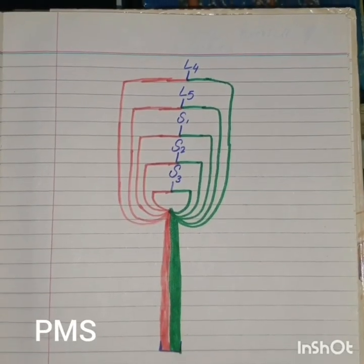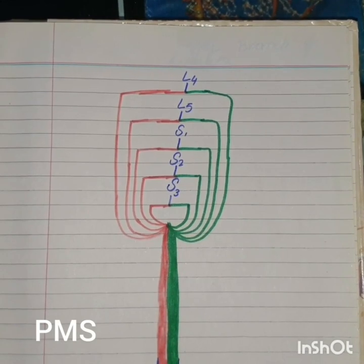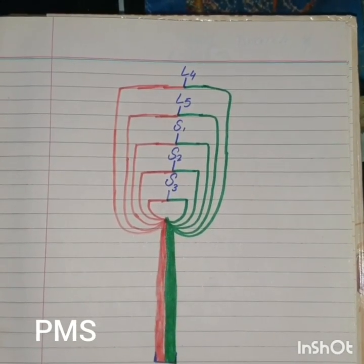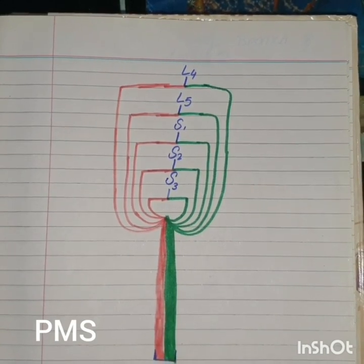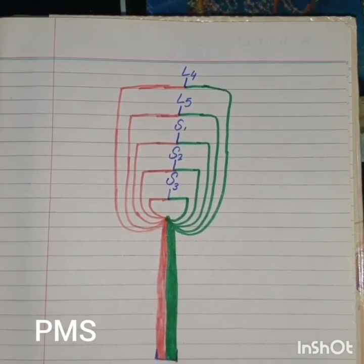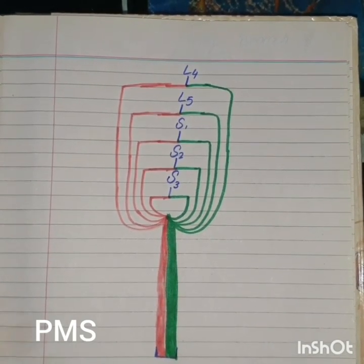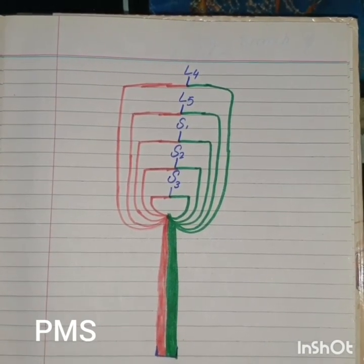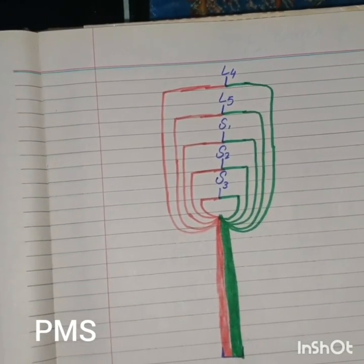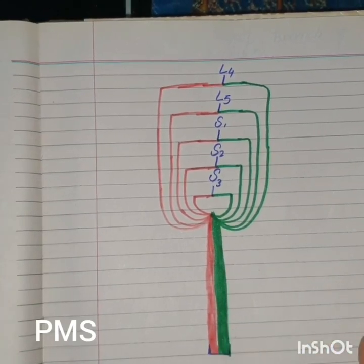Hello guys, hope you all are alright. Today we are going to talk about the sciatic nerve. To study a particular nerve, one should know its root value, its course, its clinical importance, and its innervation. The sciatic nerve is formed by the anterior rami of L4, L5, S1, S2, and S3 segments of the spinal cord.